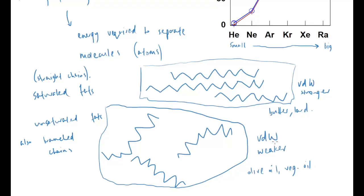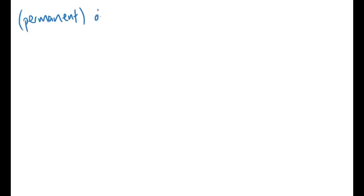So that's Van der Waals forces: electrons moving around causing an overall attraction. Moving on to the next one — permanent dipole-dipole forces. With Van der Waals I mentioned temporary or induced dipoles due to movement of electrons. With permanent dipole-dipole forces, as the name implies, the dipole is not temporary — it's permanent.